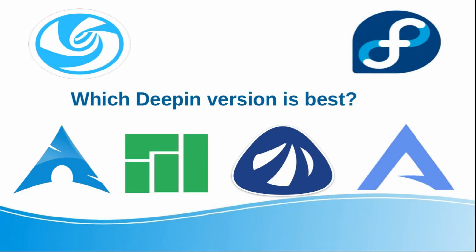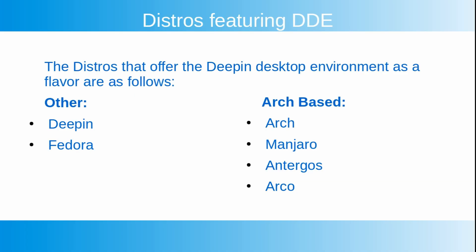Hey guys, welcome back. This is a quick little presentation talking about which Deepin version is best. I'll be showcasing the main distributions that offer the desktop environment as a flavor, and talking about the pros and cons of each. The distros that feature the Deepin desktop environment are Deepin itself, Fedora, and for the Arch-based ones: Arch, Manjaro, Antergos, and ArcoLinux.